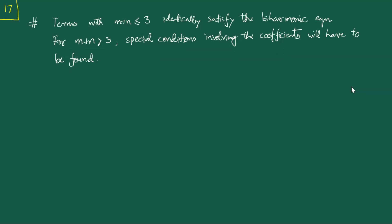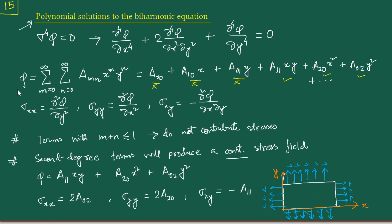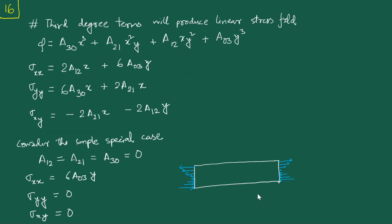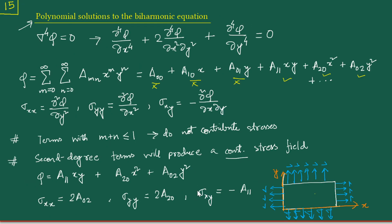Hello everyone. In the previous lecture we were discussing the polynomial solution forms to the biharmonic equation, and at the end we were discussing about generating solutions of practical interest in some real problems. When we were talking about the second degree terms, we were only considering those kinds of terms, but suppose we had some combinations of loads which would not be individually satisfied by only the cubic terms or by only the second degree terms — what then would we possibly combine them?